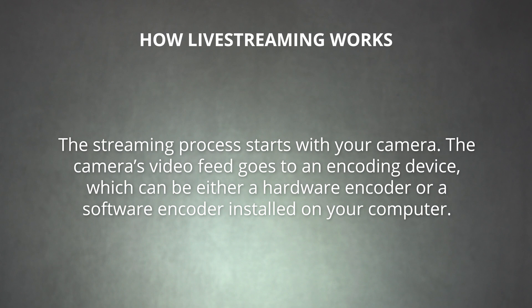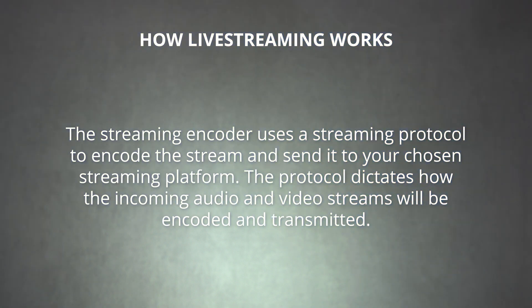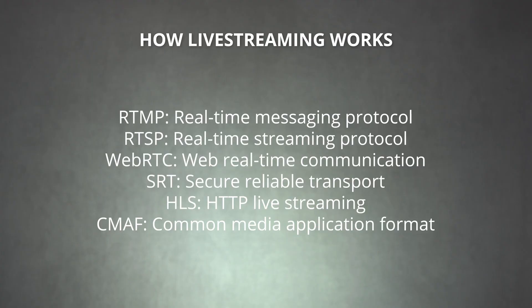The streaming process starts with your camera. The video's camera feed goes to an encoding device, which can be either a hardware encoder or a software encoder installed on your computer. The streaming encoder uses a streaming protocol to encode the stream and send it to your chosen streaming platform. The protocol dictates how the incoming audio and video streams will be encoded and transmitted. There are a variety of protocols in use today, and each different protocol offers its own benefits. The one you use will partially depend on your streaming setup and destination platform.